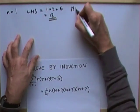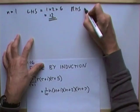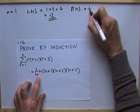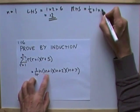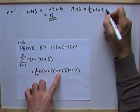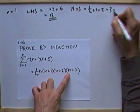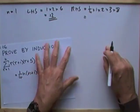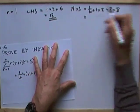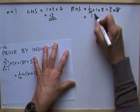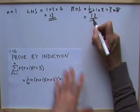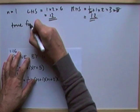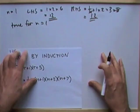The right-hand side is going to be a quarter times 1 times 2 times 3 times 8. That gives 4 and 2 equals 2, times 2 to give 4, then 12 — which means it's true for n equals 1.